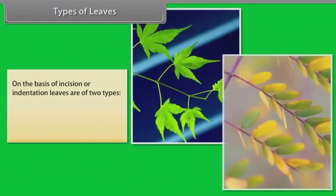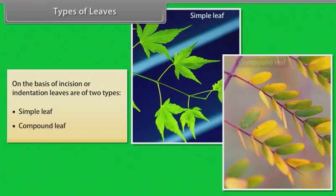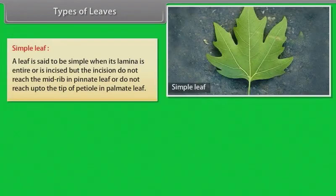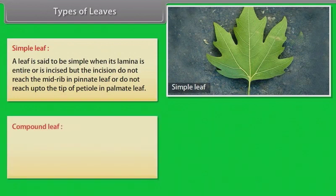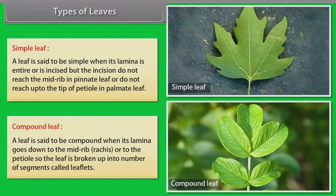Types of leaves. On the basis of incision or indentation, leaves are of two types: simple leaf and compound leaf. A leaf is said to be simple when its lamina is entire or is incised, but the incision does not reach the midrib in a pinnate leaf or does not reach up to the tip of the petiole in a palmate leaf. A leaf is said to be compound when its lamina goes down to the midrib, rachis or to the petiole, so the leaf is broken up into a number of segments called leaflets.